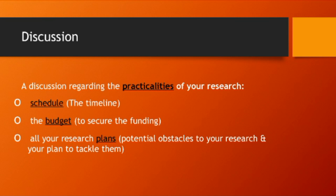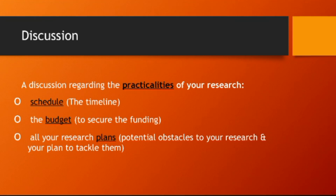We also discuss the budget of the research. It is possible that we need to approve the research proposal and secure funding — this is why we have to mention the sponsor and schedule. There are also plans for potential obstacles: climatic conditions, geographical conditions, seasonal barriers, or methods you have to use, and what your plan is to tackle them. All these things are covered in the discussion section.